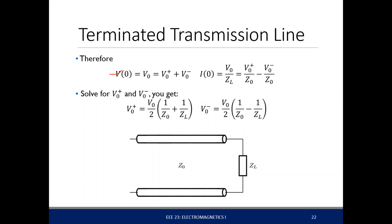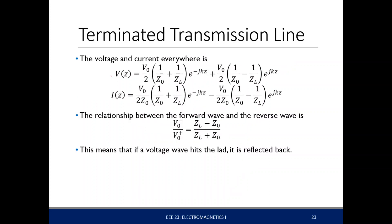We get two equations and two unknowns, and we can solve for the amplitude of the forward traveling wave and the backward or reverse traveling wave. The voltage wave is defined by one equation, the current wave by another, and we can relate the forward wave and the reverse wave by their ratio.